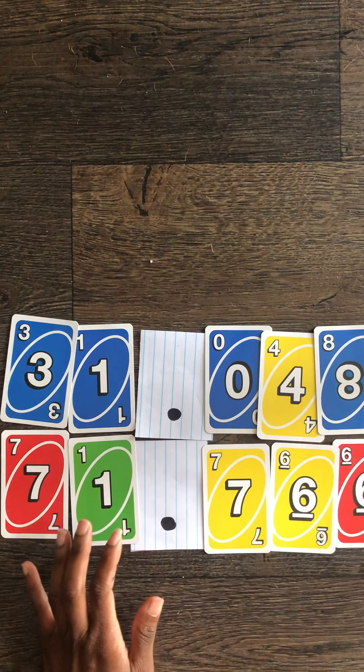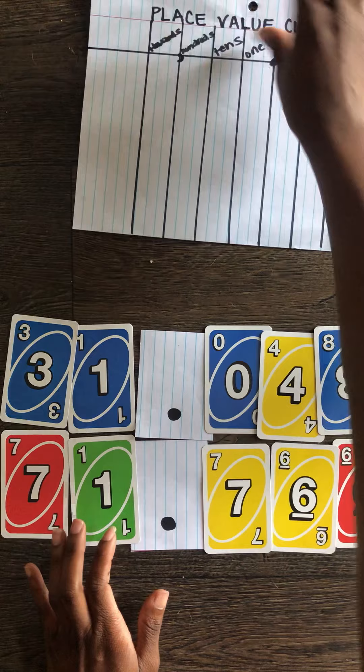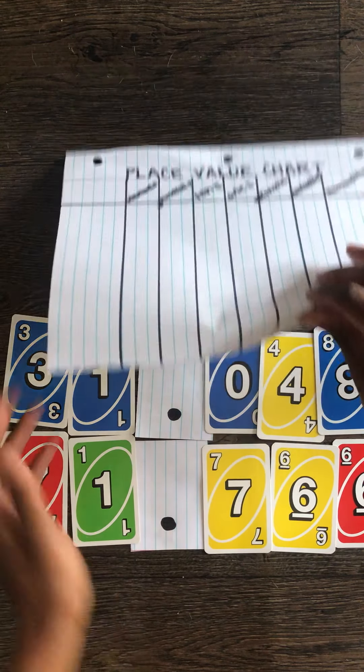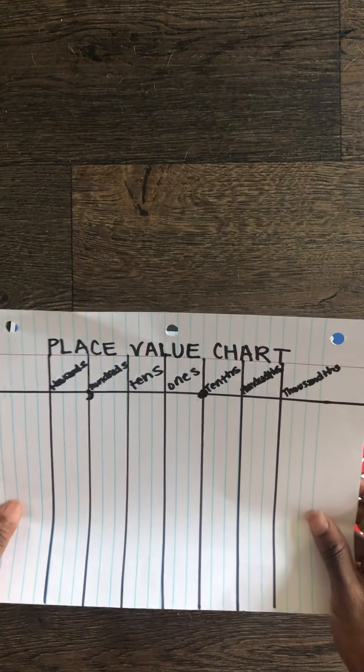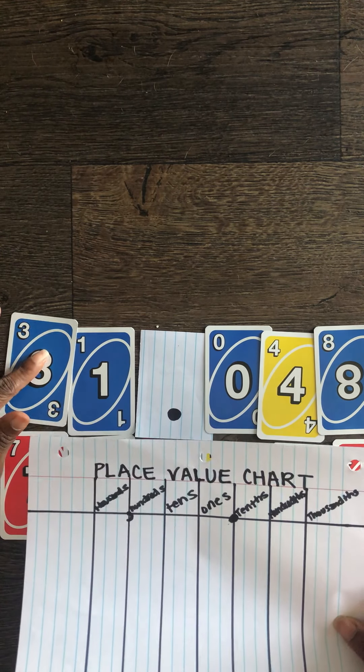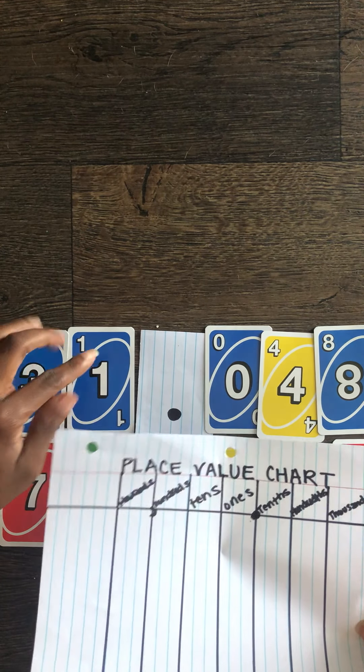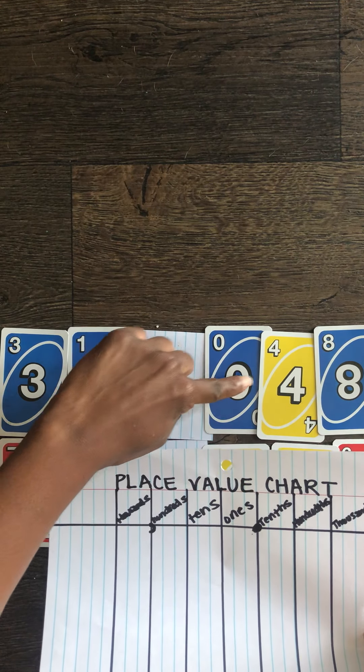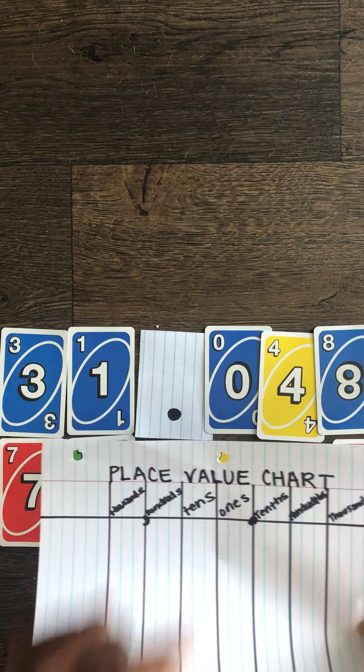Once you have your numbers here you want to use your place value chart to help you line up those numbers in case you've forgotten what the place values are. So we know this is the tens place, the ones place, there's a decimal here, the tenths, the hundredths, and the thousandths.